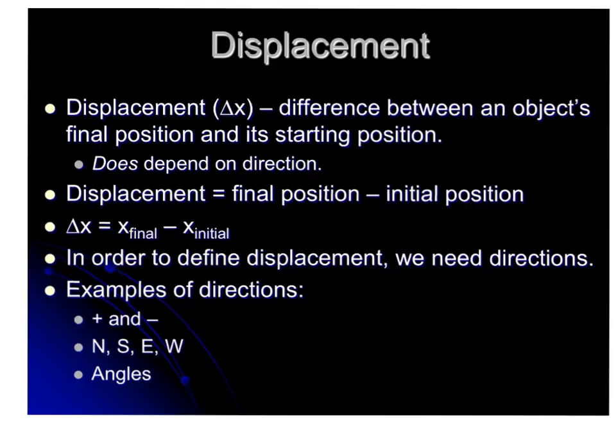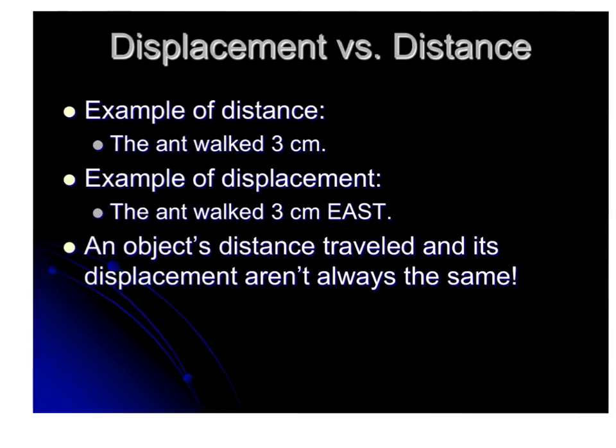In order to define displacement, we have to have a direction added to that. So it might be a positive or negative, north, south, east, west, or sometimes you'll see it in an angle. Earlier, when we talked about the ant walking, we said that it went 3 cm. That was a distance. So to make it displacement, I would have to say that the ant walked 3 cm east. An object's distance traveled and its displacement aren't always the same, though.